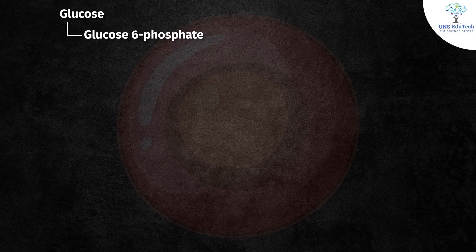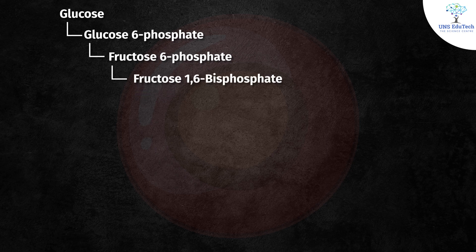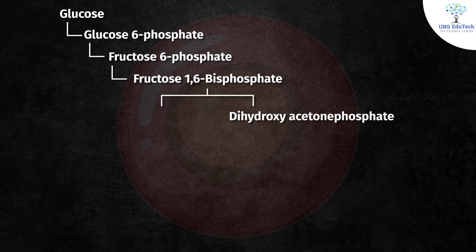First, let's see the different steps involved in glycolysis. When glucose enters a cell, it is trapped inside by converting glucose to glucose 6-phosphate. Glucose 6-phosphate is then converted into its isomeric form, fructose 6-phosphate, and fructose 6-phosphate is converted into fructose 1,6-bisphosphate.